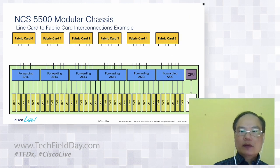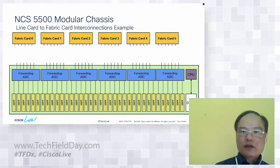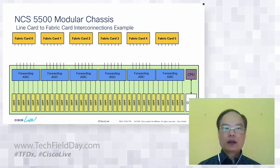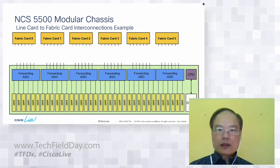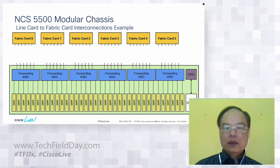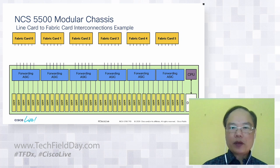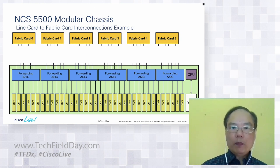The fabric connections are very simple with full mesh connectivity to all NPUs on all line cards of the chassis. In this example, the six NPUs of the line cards will be connected in full mesh to all six fabric cards, and we will step through the fabric connections one by one.